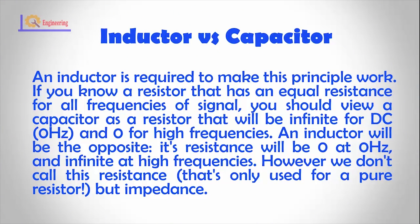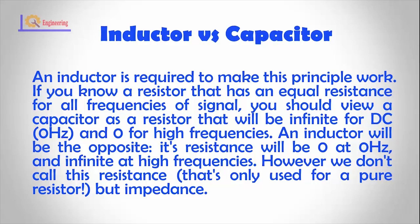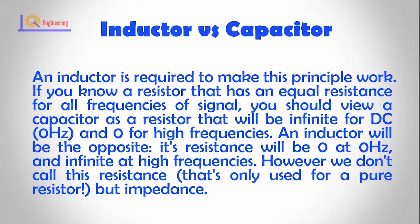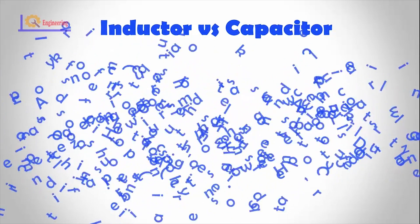If you know a resistor that has equal resistance for all frequencies of signal, you should view a capacitor as a resistor that will be infinite for DC at 0 Hz and zero for high frequencies. An inductor will be the opposite — its resistance will be zero at 0 Hz and infinite at high frequencies. However, we don't call this resistance, which is only used for a pure resistor, but impedance.